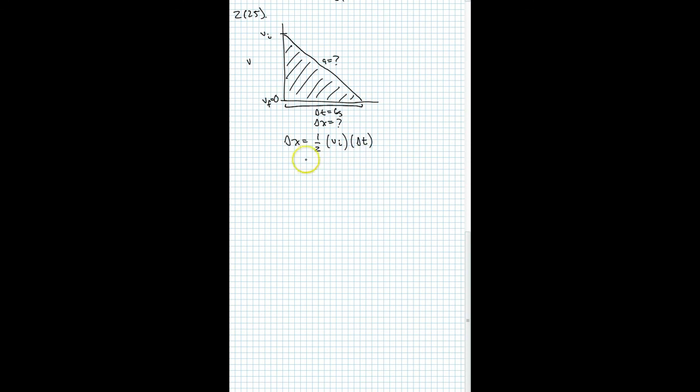So if we calculate that, we have 1/2 times our VI of 21 meters per second and our delta T of 6 seconds, which gives us a displacement of 63 meters.